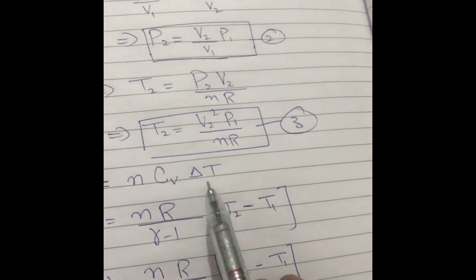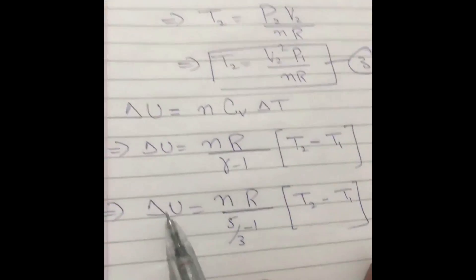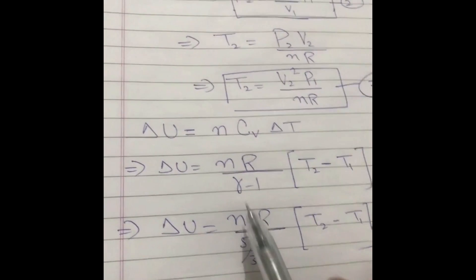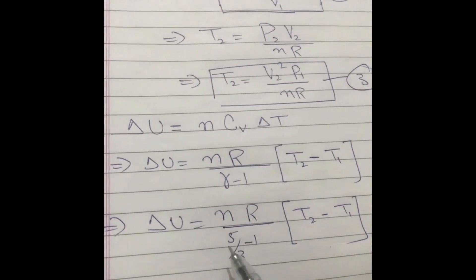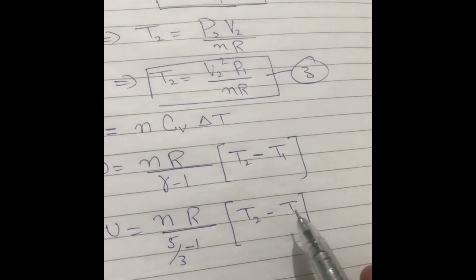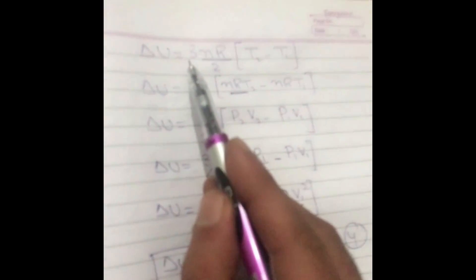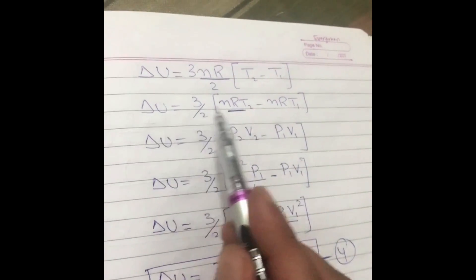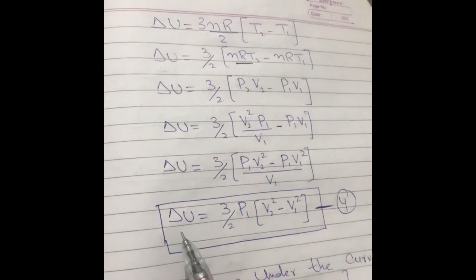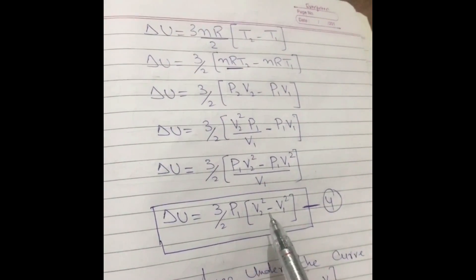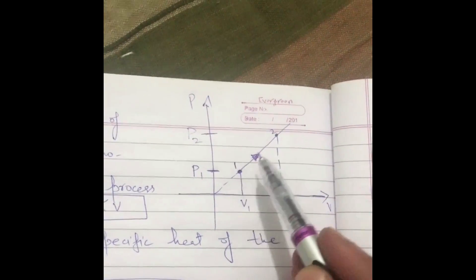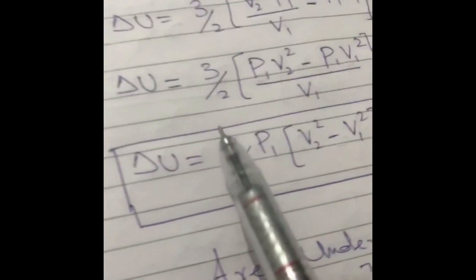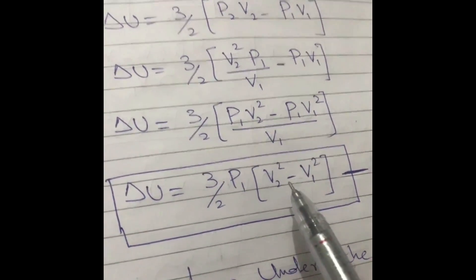Delta T is T2 minus T1. Delta U equals nR divided by (gamma minus 1) times delta T. For a monoatomic gas, gamma equals 5/3, so gamma minus 1 equals 2/3, giving delta U = (3nR/2)·(T2 − T1). After substituting and simplifying, delta U equals (3/2)·(p1/v1)·(v2² − v1²).